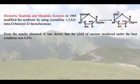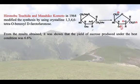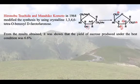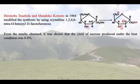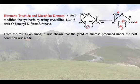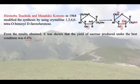They used 1,3,4,6-tetra-O-benzyl fructofuranose — all of the acetylating groups were changed to benzyl groups — and that was a pure crystalline substance. This slight modification to the Lemieux and Huber synthesis of 1953, made in 1964, resulted in an enhanced yield that increased from 5.5% to 6.5%.